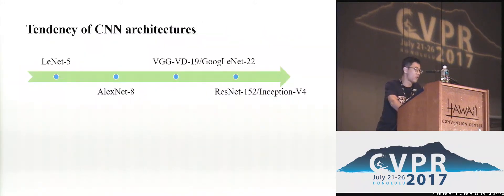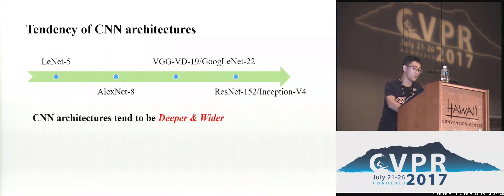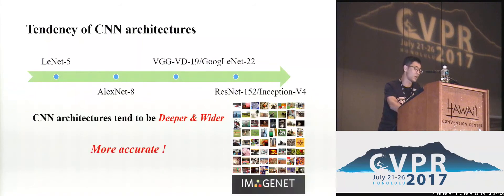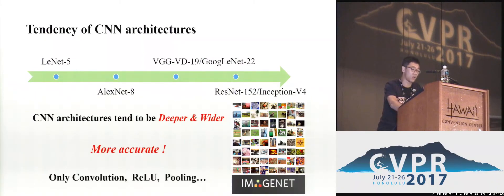As we know, from AlexNet of five years ago to ResNet of more than 100 layers, CNN architectures seem to be deeper and better. Of course, they also become more accurate. However, these networks are only composed of traditional convolution, ReLU, pooling, and shortcut connection operations.